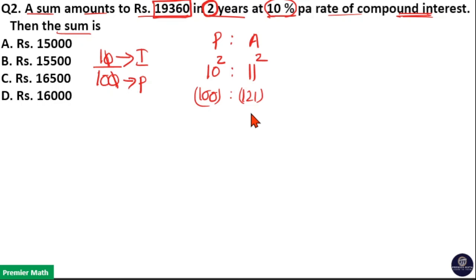That means this 121 unit is equal to 19,360. Here you can see 121 goes 1 time in 193, 21 plus 70 is 91, so remaining is 72.